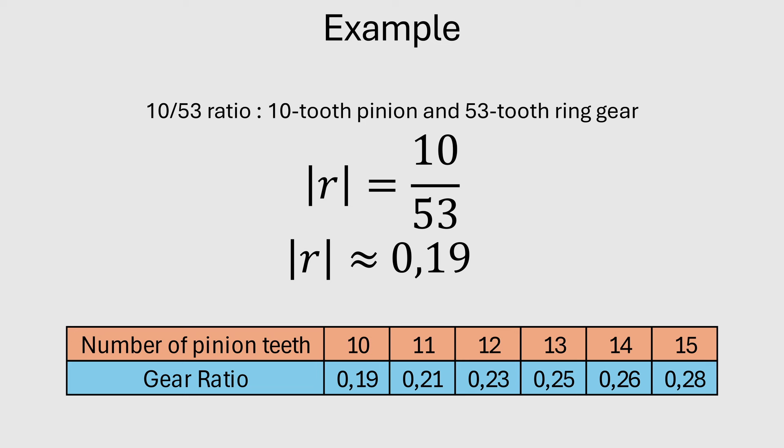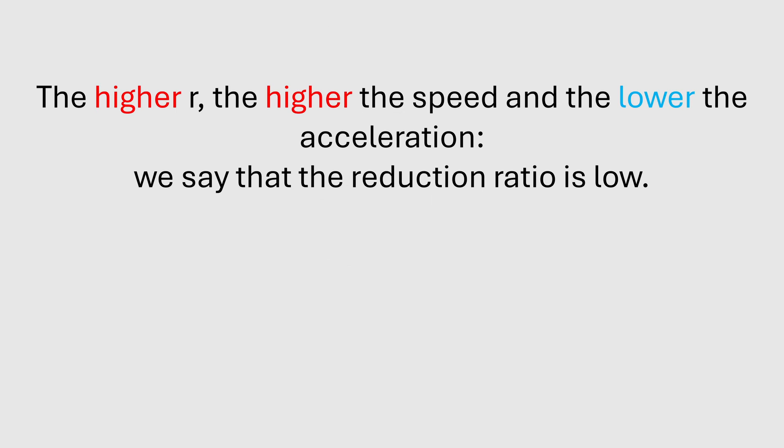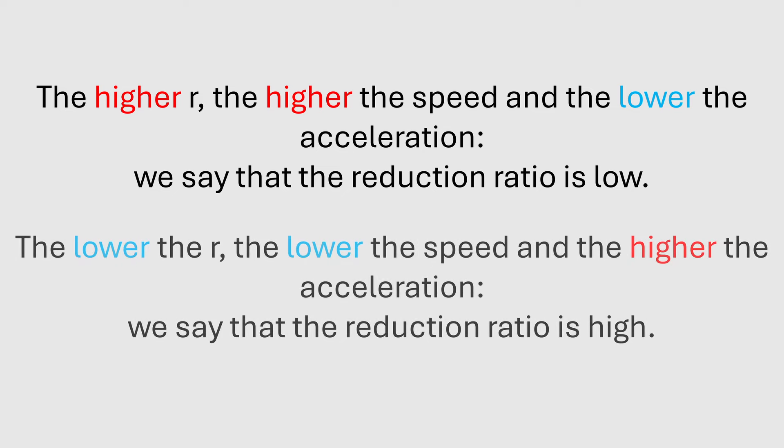Now let's look at the effect of the gear ratio. The higher the R, the higher the speed and the lower the acceleration - we say that the reduction ratio is low. The lower the R, the lower the speed and the higher the acceleration - we say that the reduction ratio is high.